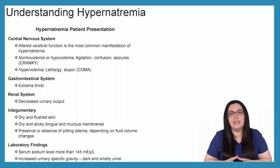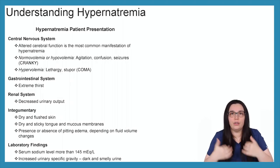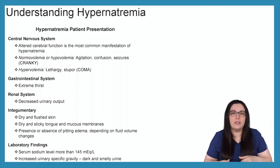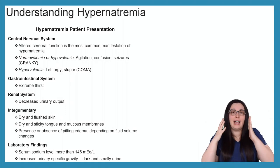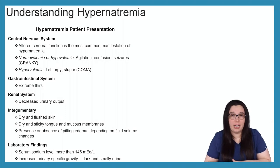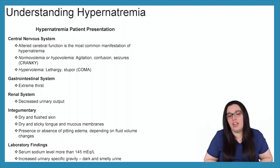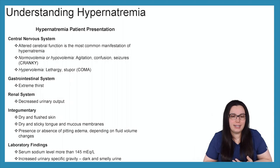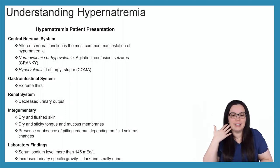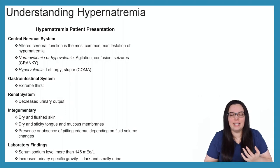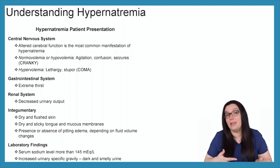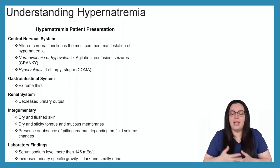With the gastrointestinal system, the patient is going to be extremely thirsty because they want to hemodilute the sodium in their blood vessels — they just need water. But especially if they're hypervolemic, you definitely don't want to be giving them water. With the renal system, we're going to see a decrease in urinary output. With the integumentary system, we're going to have dry flushed skin, dry sticky tongue, dry mucous membranes, and a presence or absence of pitting edema depending on how severe the fluid shifting is.